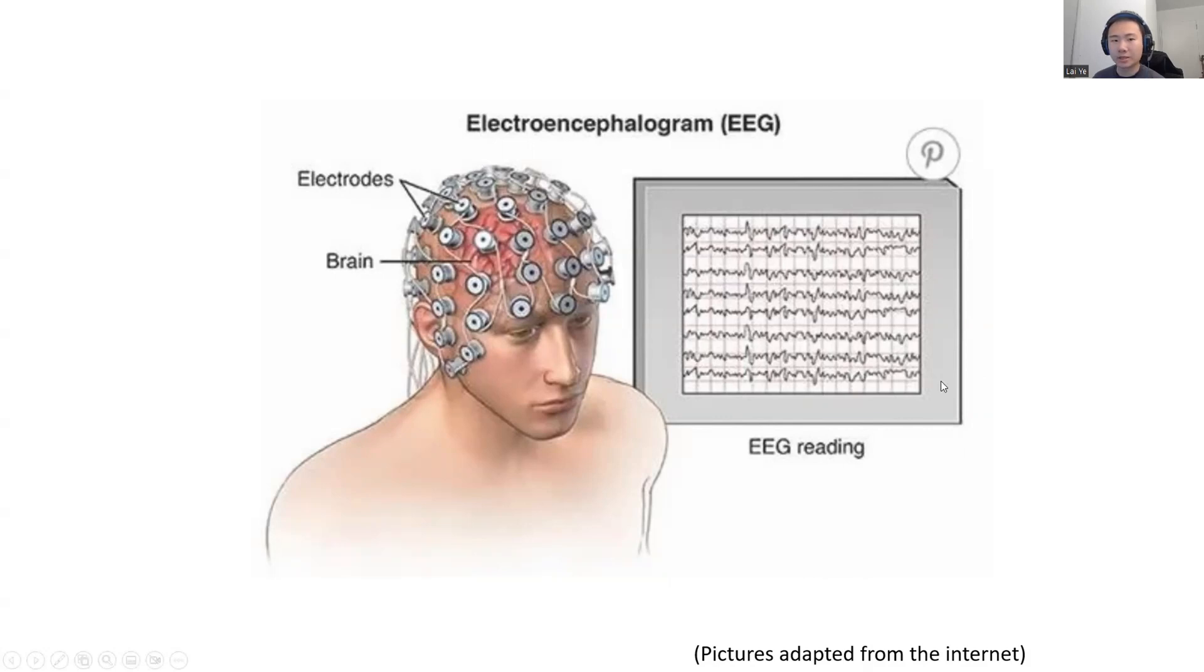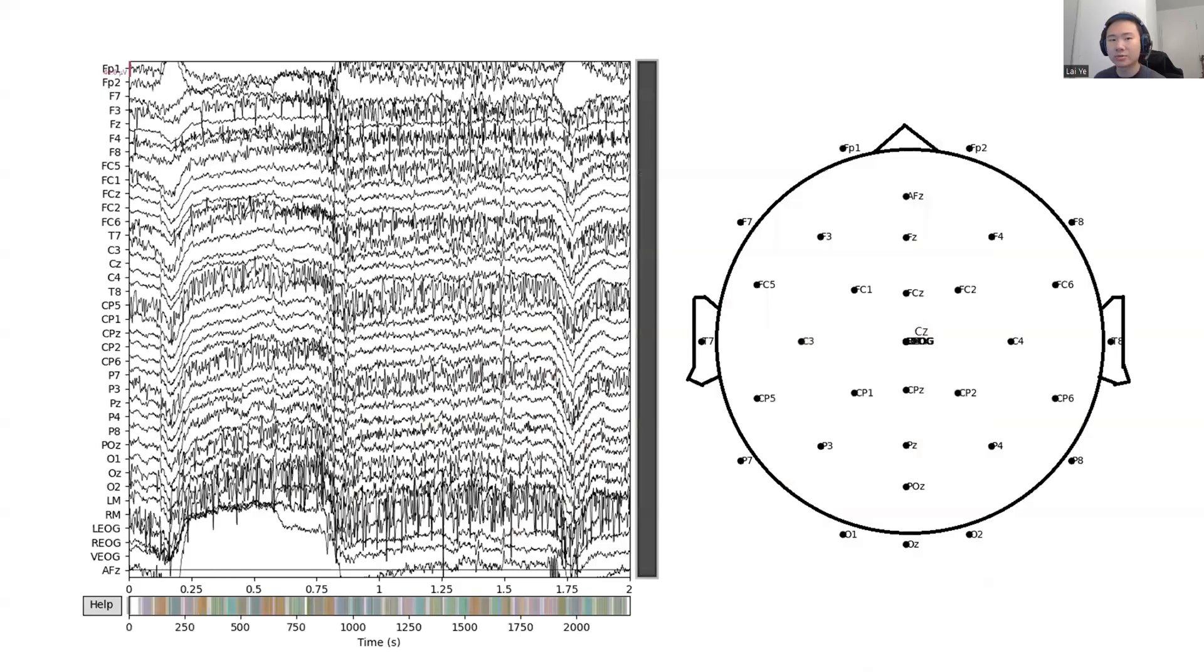An EEG is recorded by tiny electrodes attached to the skull. An EEG measures the electrical activity in the brain, which can play a role in diagnosing brain diseases. So today, I will use an open-source dataset to demonstrate some sonification techniques of EEG.